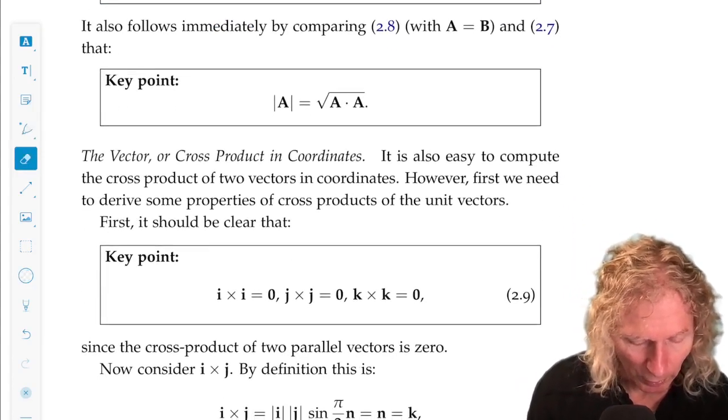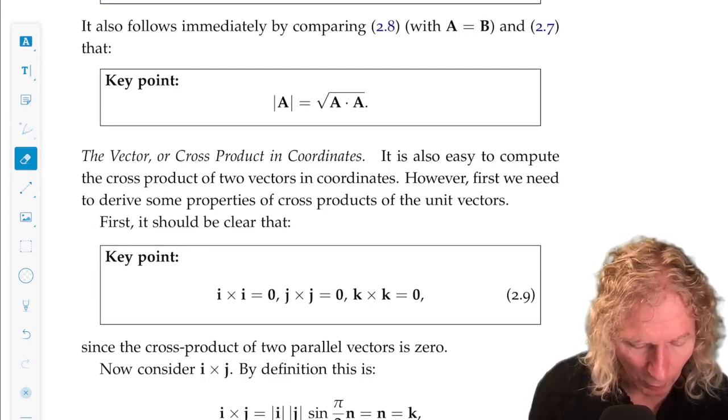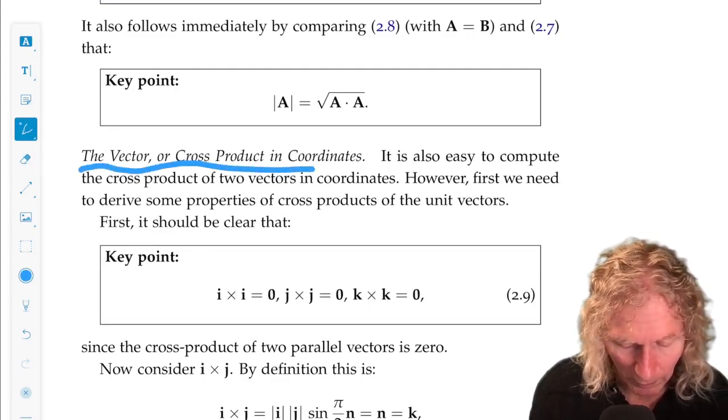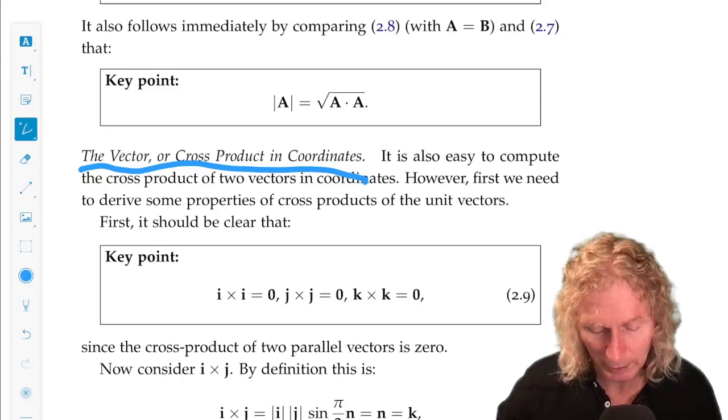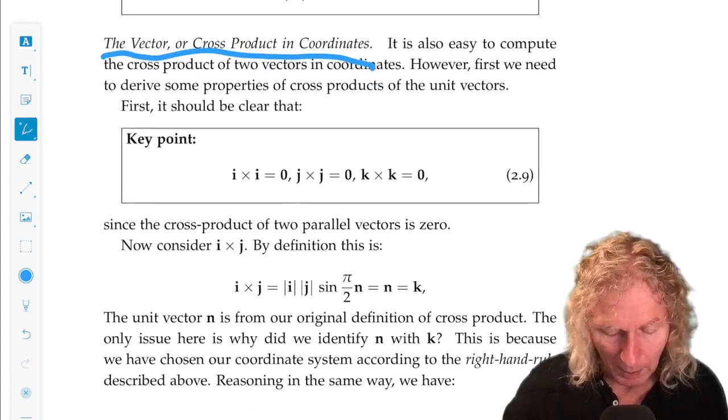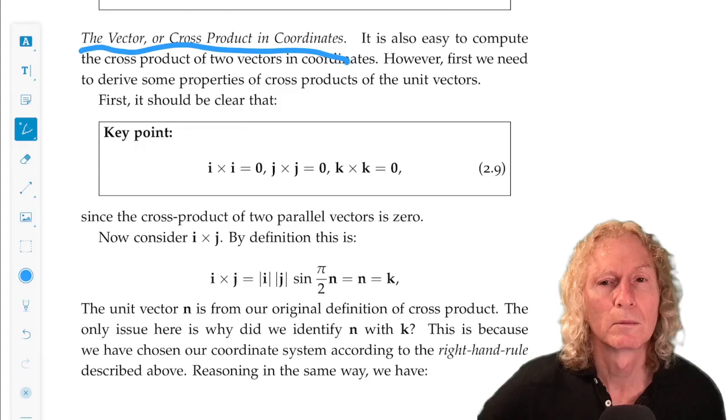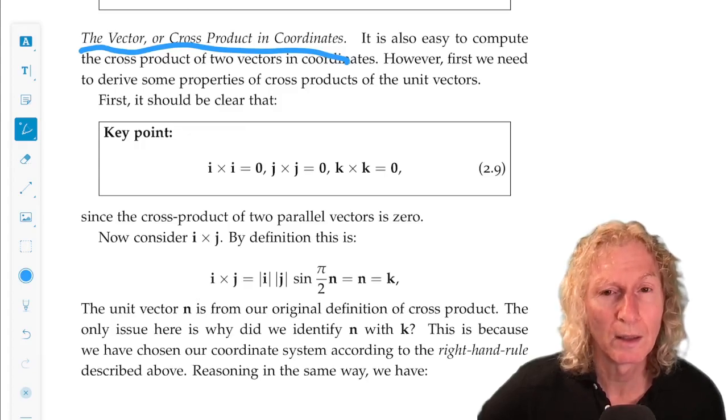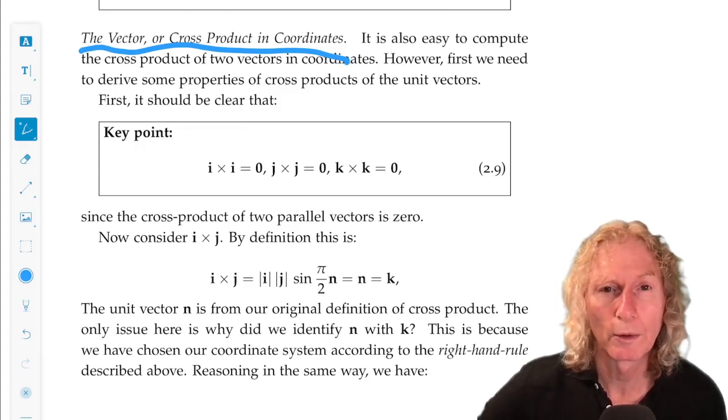So the vector or cross product in coordinates, that's a little more involved, but not much. So remember that i, j, and k are unit vectors, and they are mutually orthogonal.